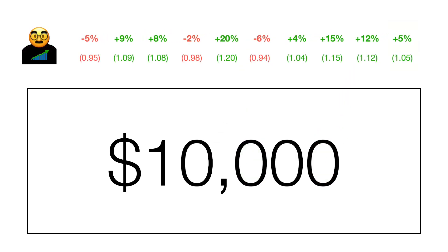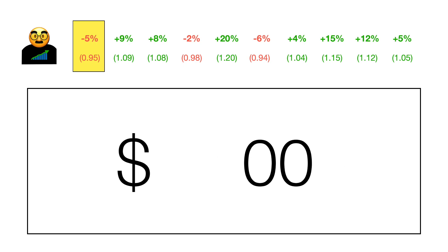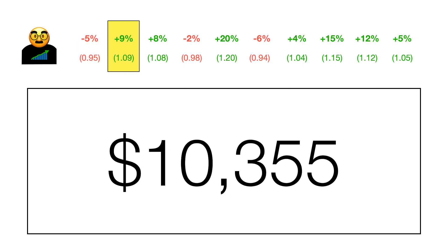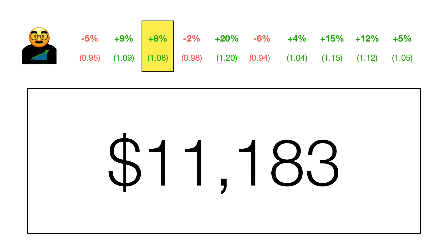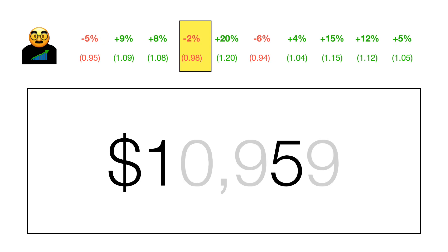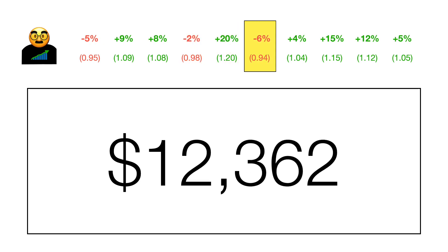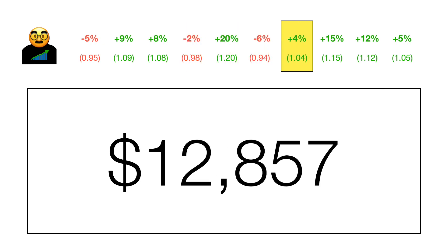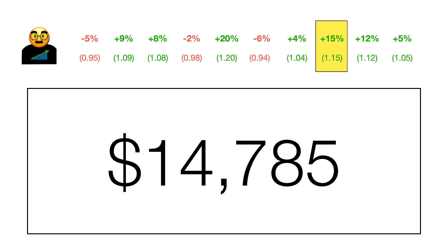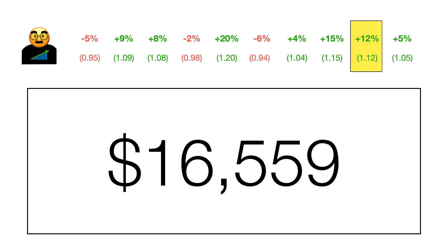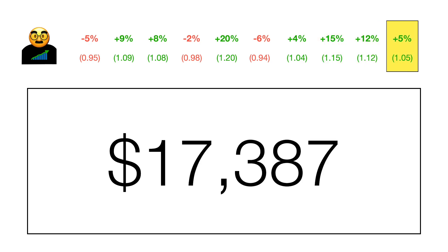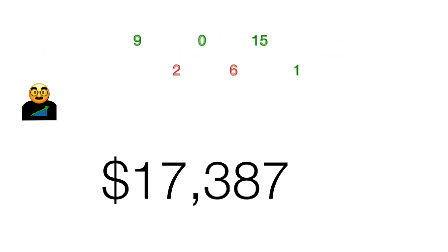Now let's go to Louie the long-term investor. His numbers are not nearly as big on gains or losses: year 1 down 5%, year 2 up 9%, up 8%, down 2%, big year up 20%, down 6%, up 4%, up 15%, then the last two years up 12% and up 5%. Over that period, Louie is up $7,387.